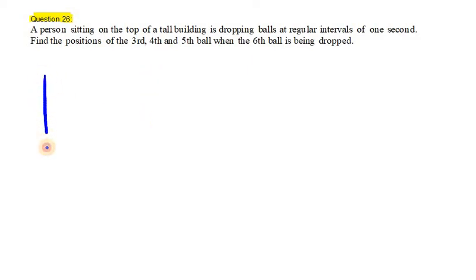So let's make a visual diagram for this. From a tall building, one person is sitting on the top and is dropping balls at a regular interval. Let us take first ball here, second here, third here, fourth here, fifth here and sixth at the top of the building.